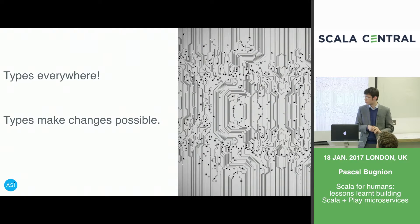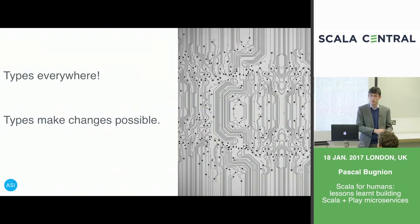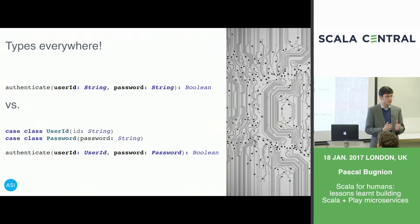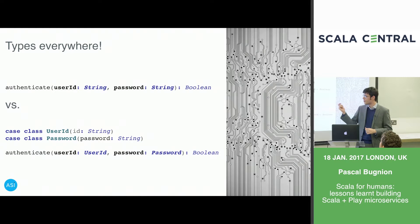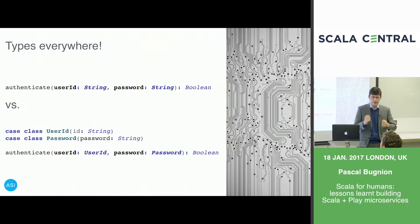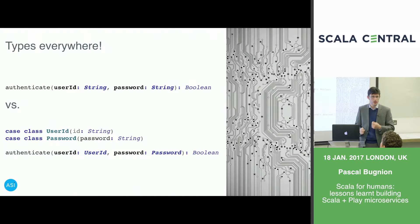The other thing we've appreciated as we've matured is using types everywhere. By putting as much information as possible into types, we've gotten much better at telling the compiler what we want the program to do, and the compiler tells us when the program doesn't do what we intended. To give an example: writing a naive authenticate method passing user ID as a string and password as a string and returning a boolean — that works, but you can get the two inverted and the compiler has no way to know.